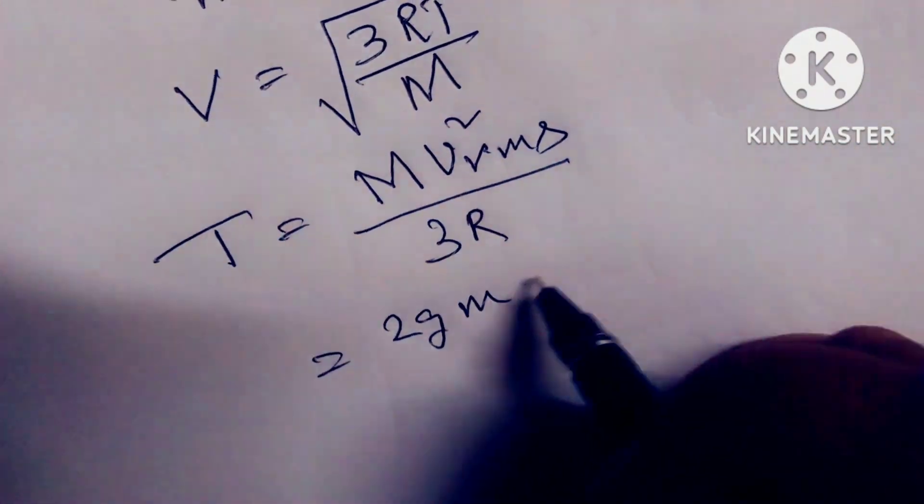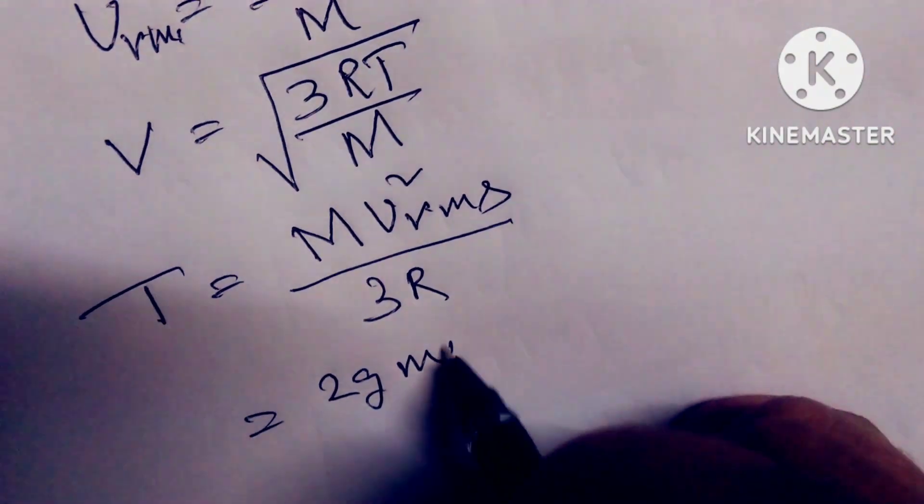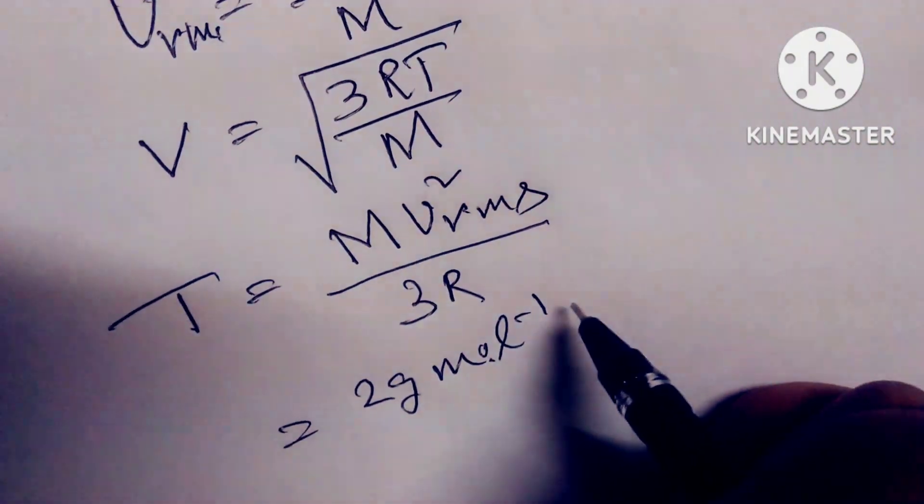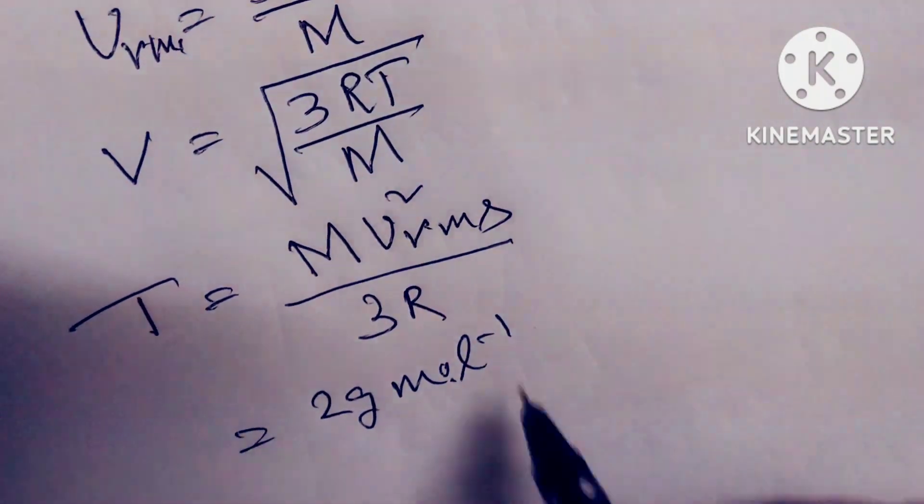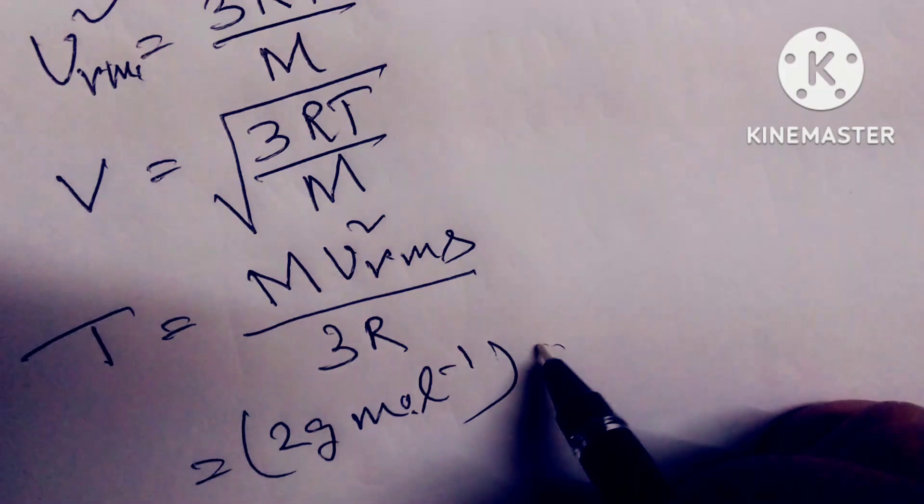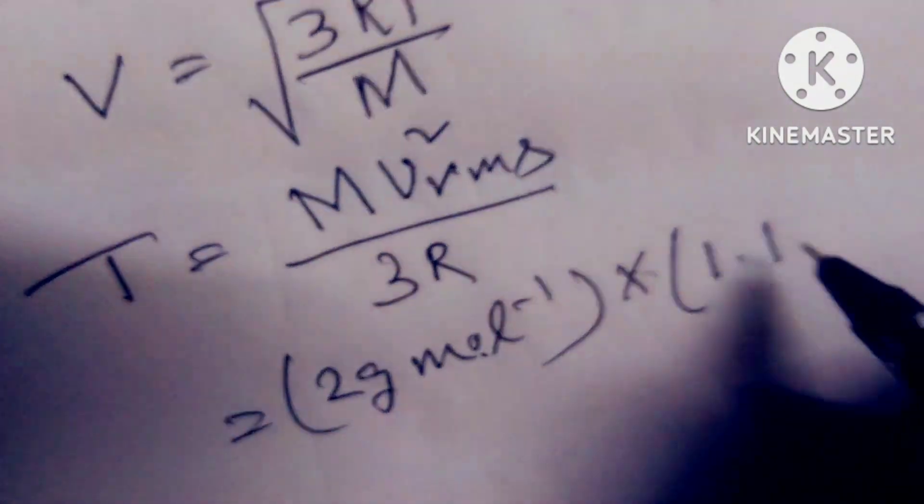So this is 3R, and M equals 2 grams per mole because M is the mass of the hydrogen molecule. And V² RMS is equal to 1.1...